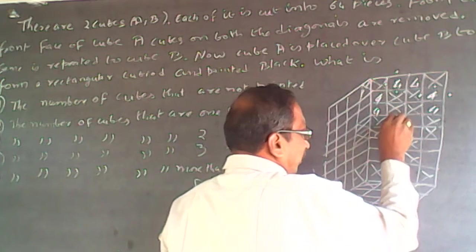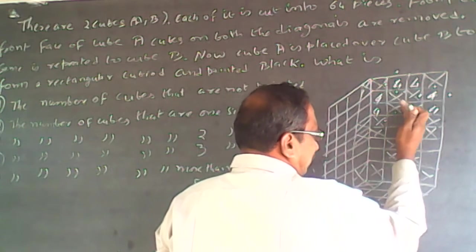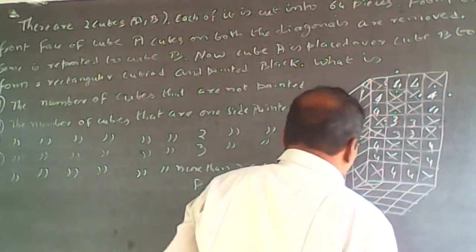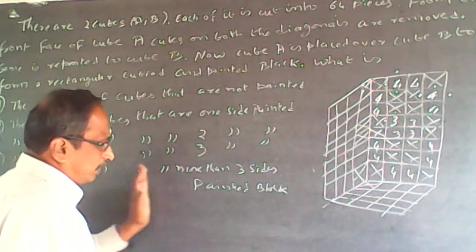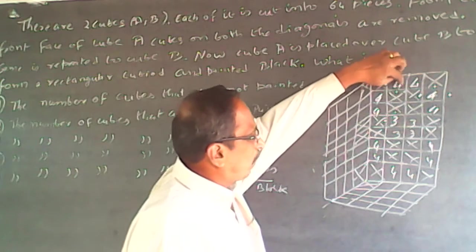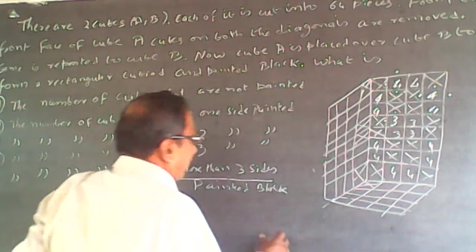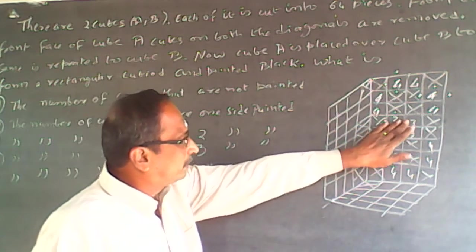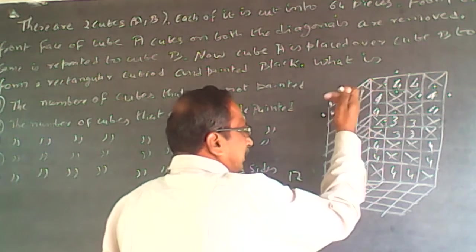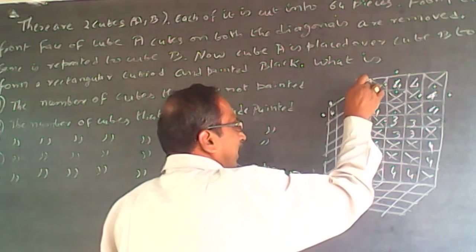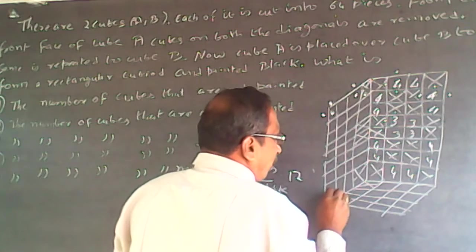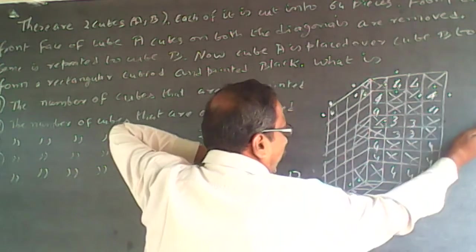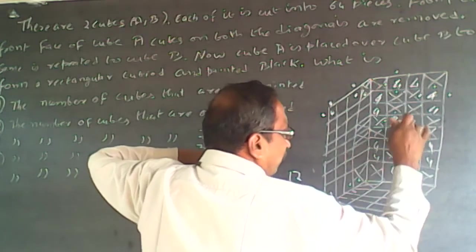Now what will happen is this cube at the front is painted here and here, but this side is attached, this side is attached, and the bottom is attached. So this corner cube will be painted only 3 sides. Similarly because this cube is removed, this will become a corner and will be painted 3 sides. This will also be painted 3 sides and this will also be painted 3 sides.